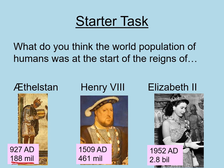When Henry VIII was on the throne, the population had more than doubled from 927 AD. In approximately 500 years it had gone up to 461 million. Between 1509 and 1952 — roughly 400 years — there was a massive jump, and suddenly there were 2.8 billion people in the world. That was when Elizabeth II came to the throne. She is still our reigning monarch now, and the population of the earth is more than 7 billion. Let's have a look at that as a graph.